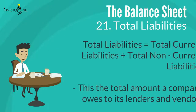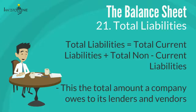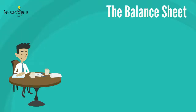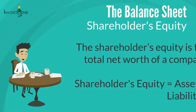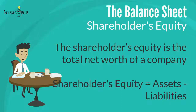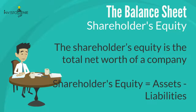Twenty-one: total liabilities. The sum of current liabilities and non-current liabilities is called total liabilities — the total amount a company owes to its lenders and vendors. The final section of the balance sheet belongs to shareholders' equity. Shareholders' equity is the total net worth of a company, calculated after subtracting liabilities from assets. The equity section is divided into several subcategories.